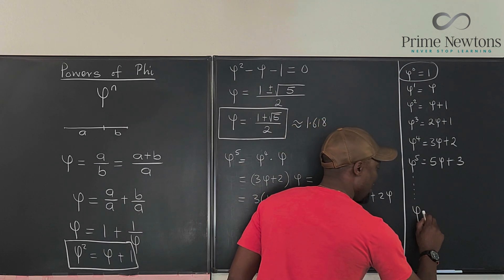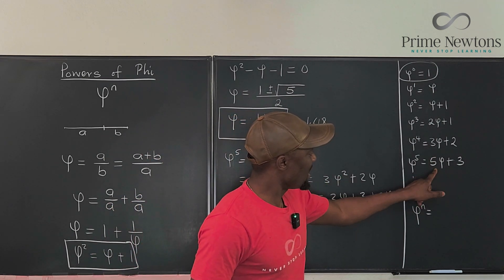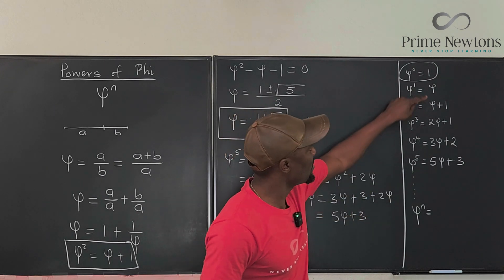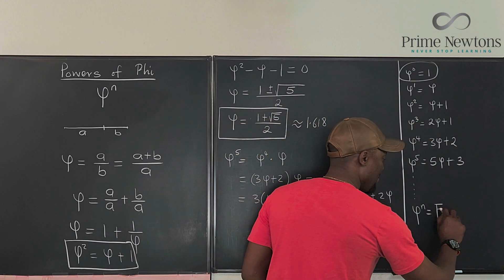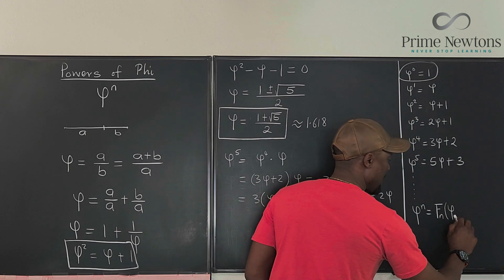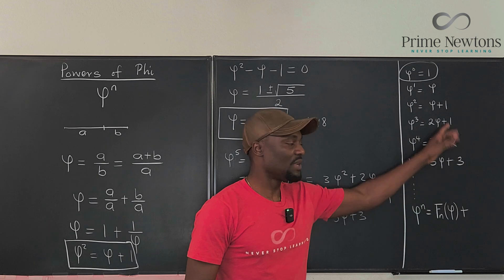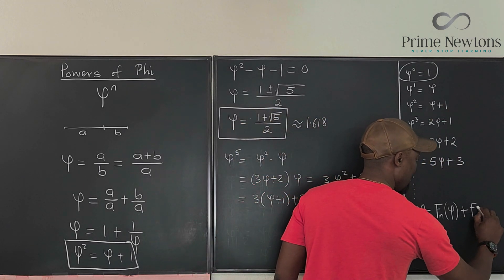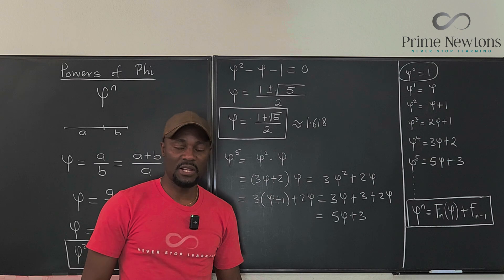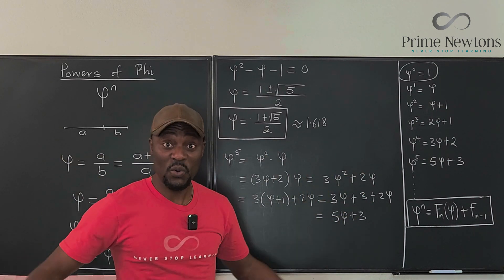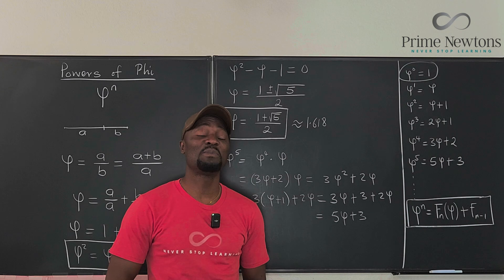So by observation — no mathematical induction needed, though you can try it yourself — phi to the n equals F(n) times phi plus F(n minus 1), where F(n) is the nth term of the Fibonacci sequence. This was the fact I used in that previous video, and now here is the explanation for it. I hope this gives you the information you need, or at least a starting point for your own research. Never stop learning — those who stop learning stop living. Bye!